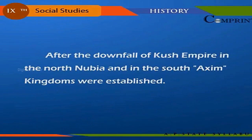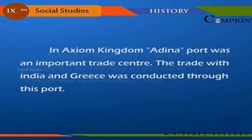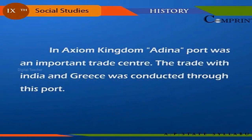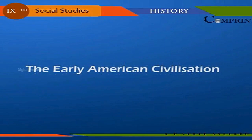After the downfall of the Kush Empire, in the north Nubia and in the south the Axum Kingdom were established. In the Axum Kingdom, the port of Adulis was an important trade center through which trade with India and Greece was conducted.